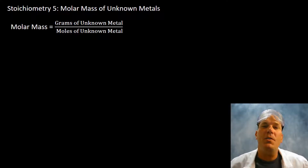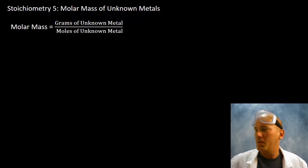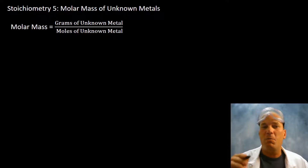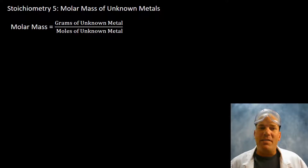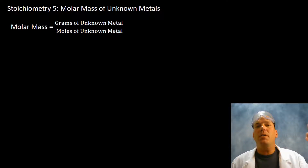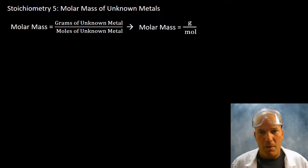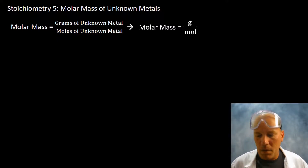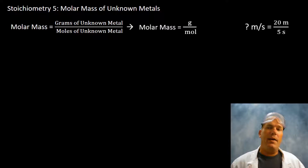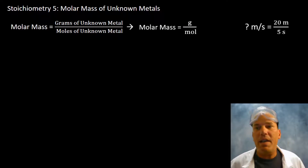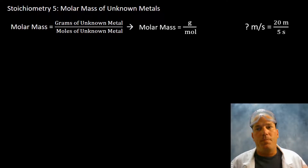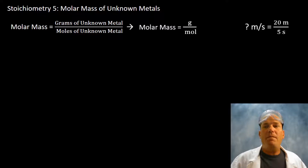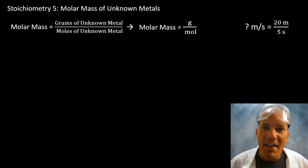In this podcast I'm going to talk about molar mass and unknown metals — some of my absolute favorite problems. Recall: molar mass is nothing more than grams divided by moles. For example, if you have 20 meters in five seconds, you divide 20 by five to get four meters per one second. That's exactly what you're doing in these unknown metal molar mass stoichiometry problems.